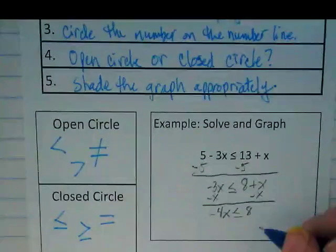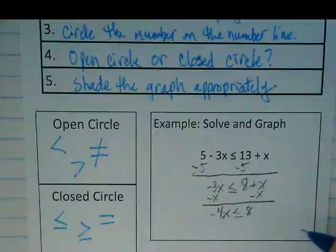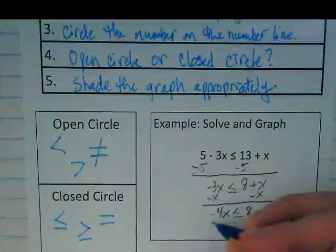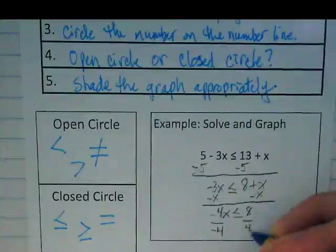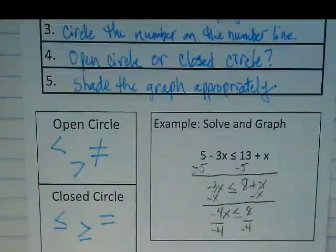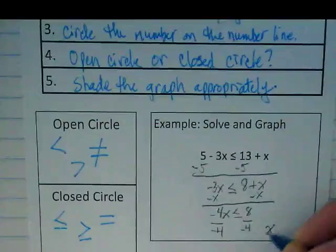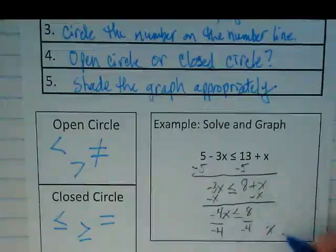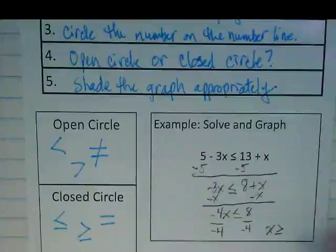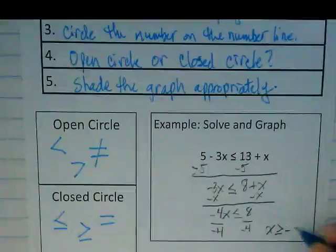The variable's not quite by itself, but we're pretty close. What do we need to do as our last thing here? We're going to divide by a negative four. That means we have to do the golden rule. We're going to end up with x is going to be positive, but instead of a less than or equal to, we're going to have a greater than or equal to negative two. And 8 divided by negative 4 is going to give us negative two.